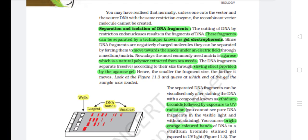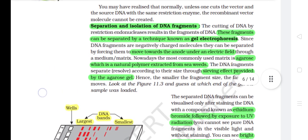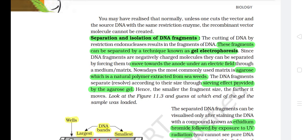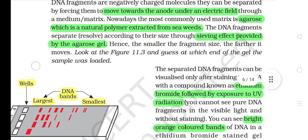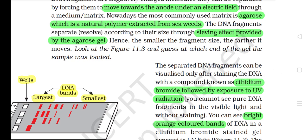Normally, unless one cuts the vector and the source DNA with the same restriction enzyme, the recombinant molecule cannot be created. The cutting of DNA by restriction endonucleases results in fragments of DNA. These fragments can be separated by a technique known as gel electrophoresis. Since DNA fragments are negatively charged molecules, they can be separated by forcing them to move towards the anode under an electric field through a medium matrix. The most commonly used matrix is agarose, which is a natural polymer extracted from seaweeds. The DNA fragments separate and resolve according to their size through the sieving effect provided by the agarose gel. Hence, the smaller the fragment size, the farther it moves.